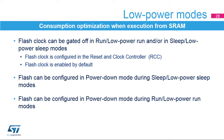The flash memory's consumption can be reduced when code is not executed from flash. The flash clock can be gated off in run and low-power run modes, and can also be configured to be gated off in sleep and low-power sleep modes. The flash clock is configured in the reset and clock controller and is enabled by default. The flash memory can be configured in power-down mode during sleep and low-power sleep modes, and also during run and low-power run modes when code is executed from SRAM. Gating the clock and putting the flash memory in power-down mode significantly reduces power consumption.